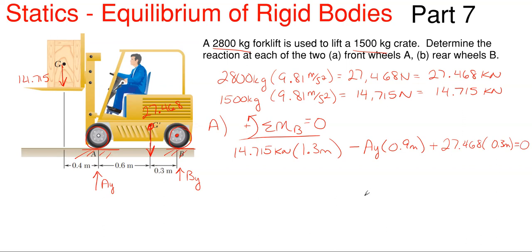When you rearrange and solve for Ay, Ay will pop out to be 30.41 kilonewtons. It came out to be a positive number, so I know my assumed arrow direction of up is correct.